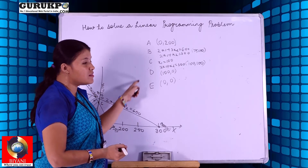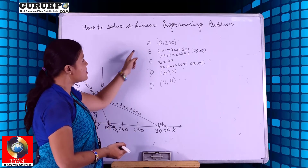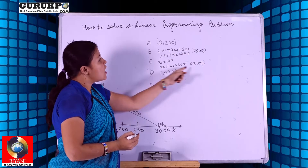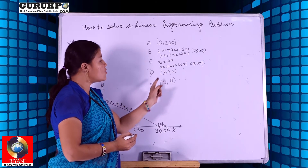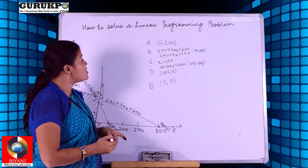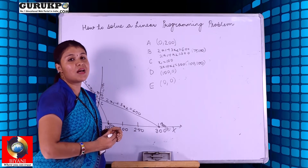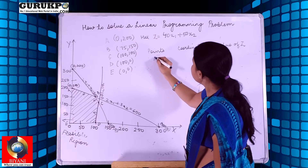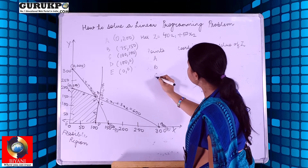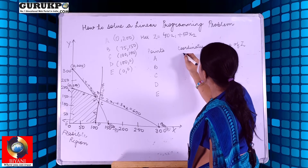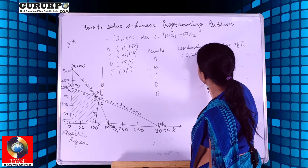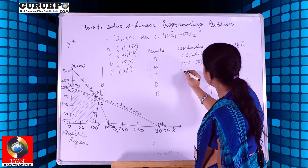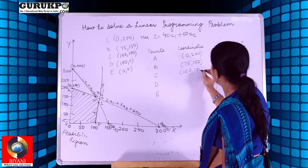We have now calculated all the corner points of the feasible region: A = (0, 200), B = (75, 150), C = (100, 100), D = (100, 0), and E = (0, 0). We are now going to substitute these points into our maximization objective function.